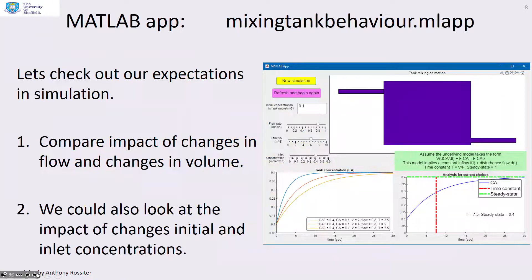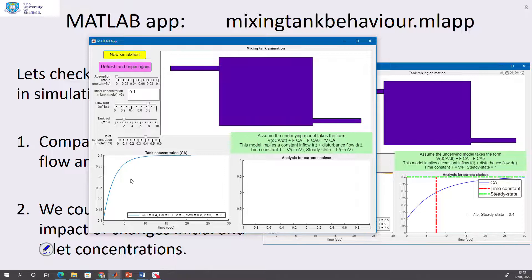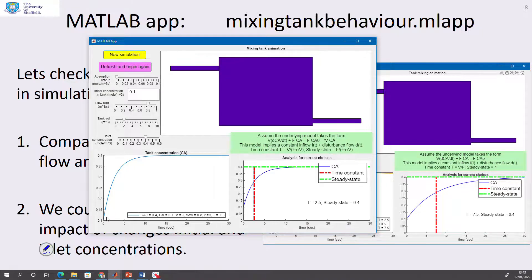So let's go to the MATLAB app and see whether these expectations are backed up in practice. So here's the app. You can see we've set the tank volume to be 2, inlet concentration to be 0.4 and the initial concentration to be 0.1, flow rate 0.8. Let's run this and see what happens. You can see very quickly the concentration goes from 0.1 to 0.4.